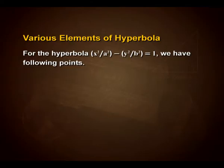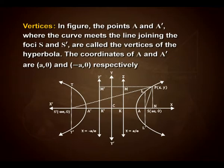Now let us look into various elements of the hyperbola x²/a² − y²/b² = 1. Vertices: the points A and A' where the curve meets the line joining the foci S and S' are called the vertices of the hyperbola. The coordinates of A and A' are (a, 0) and (−a, 0) respectively.